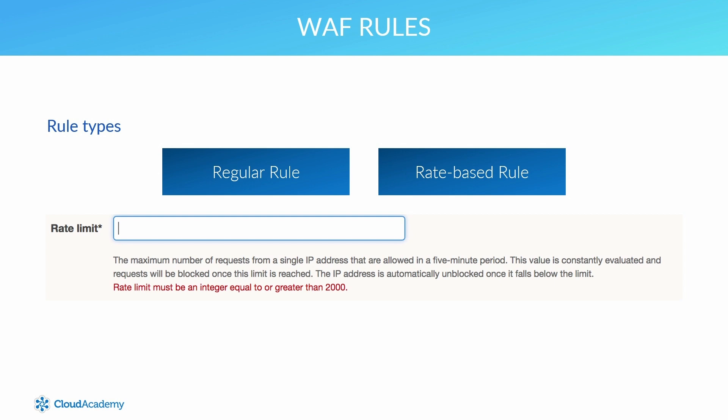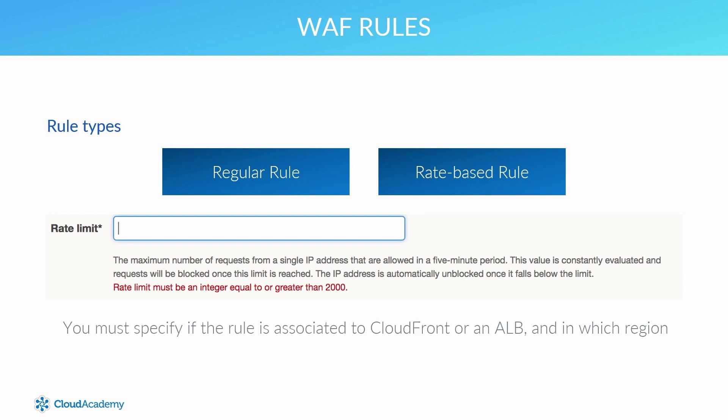If the request rate falls back below the rate limit specified, the traffic is then allowed to pass through and is no longer blocked. When setting your rate limit, it must be set to a value above 2000 — any request count under this limit is considered a regular rule. You must also specify if the rule is associated to CloudFront or an application load balancer, and if so, in which region.